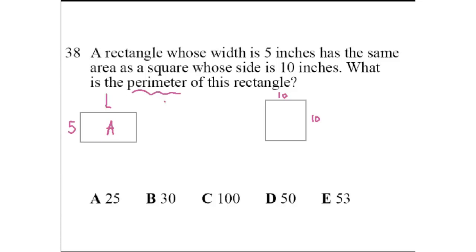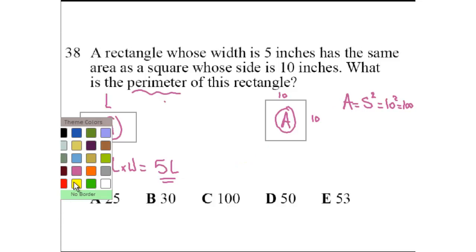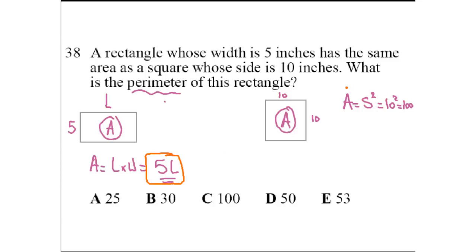What is the area of the rectangle? It's length times width, L times W. Width is already 5, so the area here is 5L, 5 times length. What's the area of the square? The area of the square is the side squared, or side times side. 10 squared is 100. So from this we can get that 5L, the area of the rectangle, is equal to 100, the area of the square. So 5L equals 100. Divide by 5, you get L equals 20.